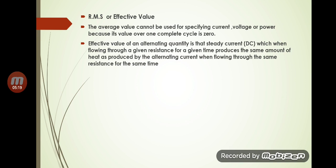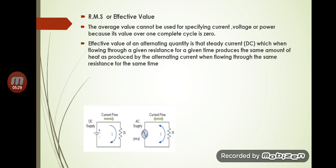The effective value of an alternating quantity is that steady current which, when flowing through a given resistance for a given time, produces the same amount of heat as produced by the alternating current when flowing through the same resistance for the same time. Consider two circuits: in the first, a DC supply drives current through a resistor; in the second, an AC supply is connected to the same resistor.